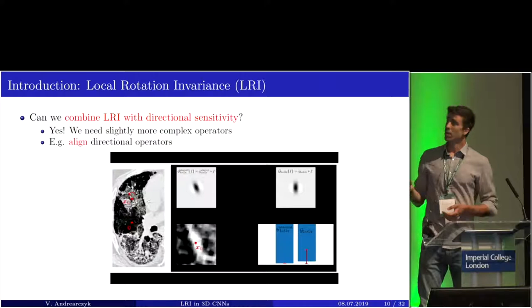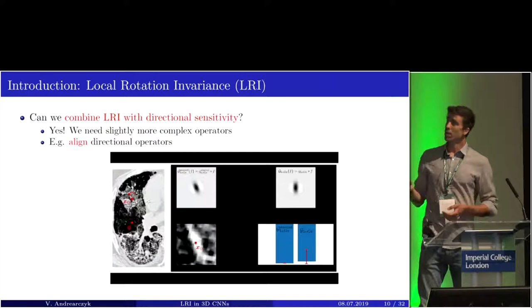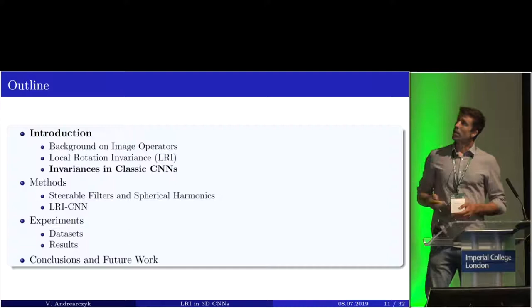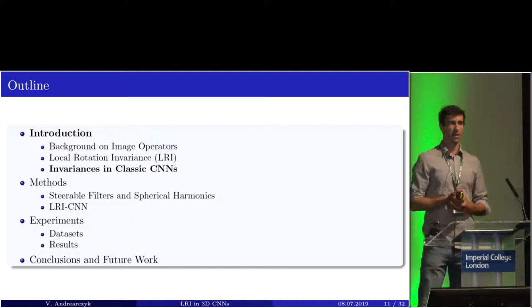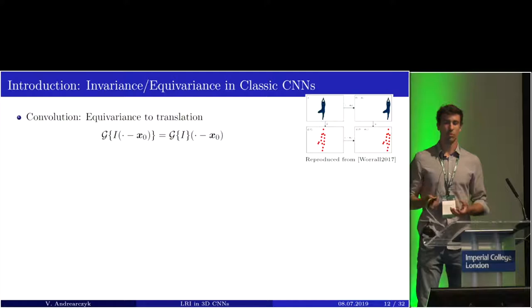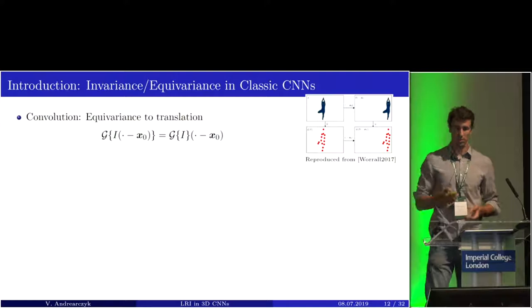For example, we can align the directional operator. We have the same operator, but when we rotate the image, if we align the filter with the image, the response is unchanged.